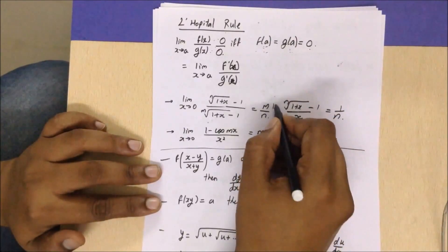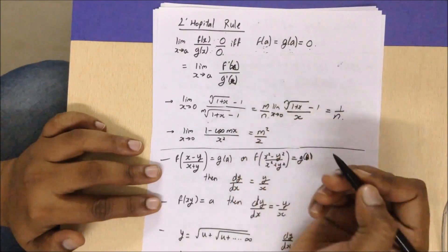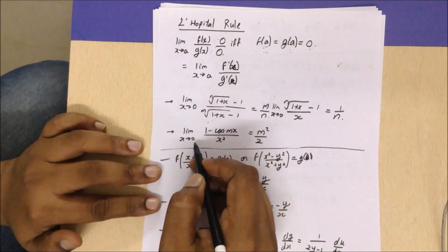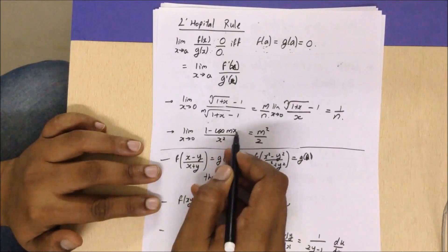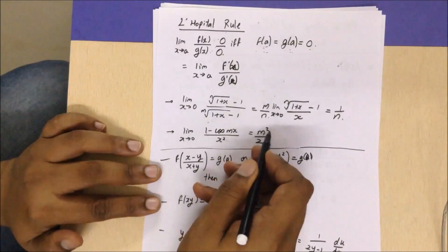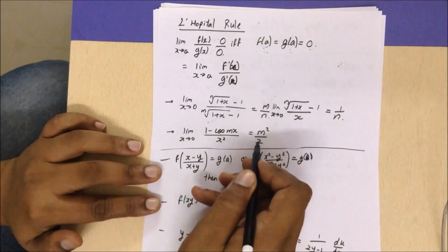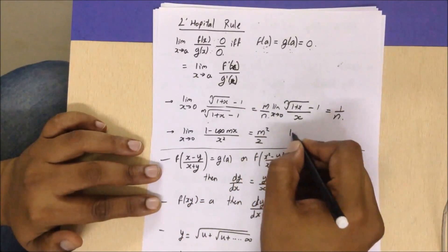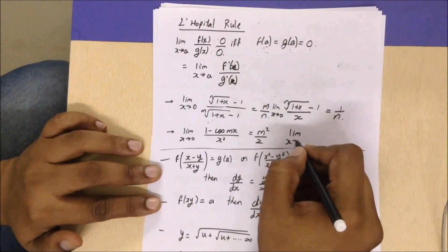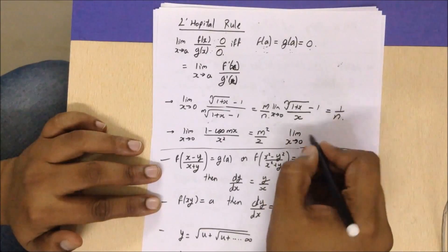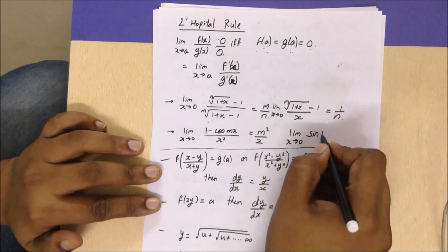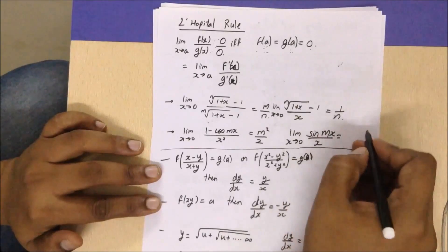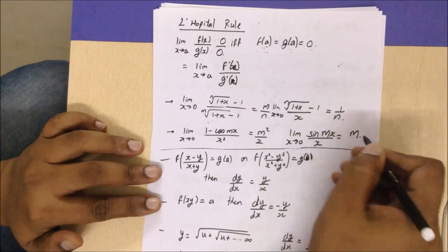The next standard limits to remember: the limit as x tends to zero of (1 - cos(mx)) / x² equals m²/2. Also, the limit as x tends to zero of sin(mx) / x equals m.